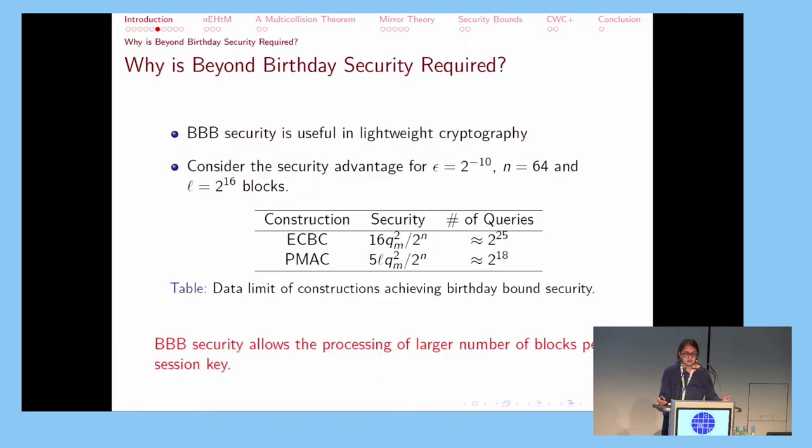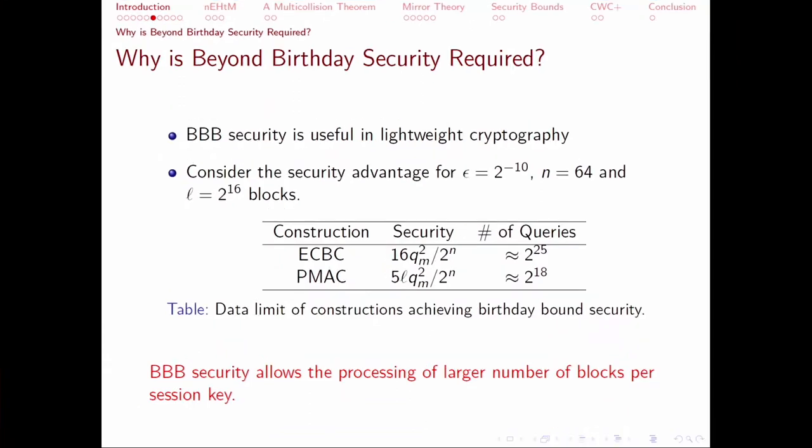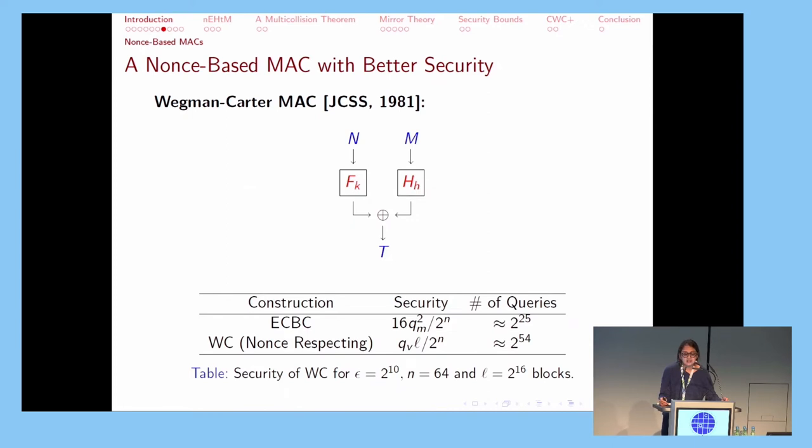However, for smaller message blocks like 64 bits, which is generally used in lightweight cryptography, this is not sufficient. As we can see, ECBC is secure only up to 2^25 queries, and PMAC can be attacked in just 2^18 queries. So this is a serious data constraint and we need higher security. Wegman-Carter MAC gives quite better security compared to ECBC. It uses a nonce input along with the message to compute the tag, and as we can see, it is secure up to approximately 2^54 queries. So that's quite an improvement.